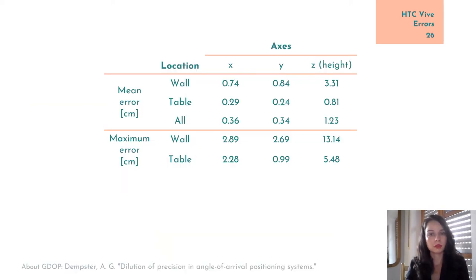We acquired in total 8 datasets with slightly different base station placements. We found that, on average, errors in the XY plane were sub-centimeter, being slightly higher on the walls. This might be because the walls are at the boundary of the base station's field of view, or because our ground truth measurements might have higher errors near the walls.